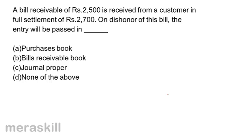When the bill is dishonored, the bill is cancelled and the customer is debited. Entry: debtor account debit to bill receivable — 2,700. This will be recorded in the journal proper. Correct answer: option C, journal proper.